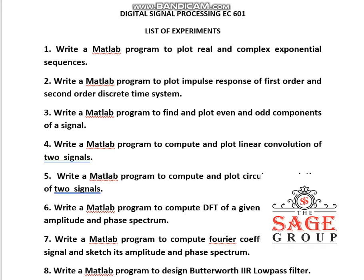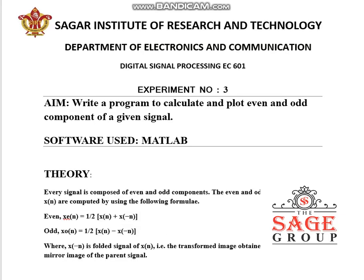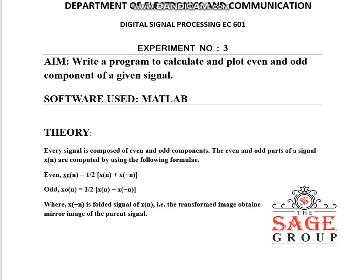Write a MATLAB program to find and plot even and odd components of a signal. The software used in this practical is MATLAB. We know the even signal is the signal which has even symmetry with respect to the y-axis, that is x(n) is equal to x(-n).